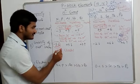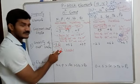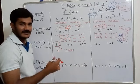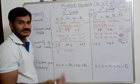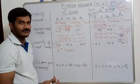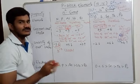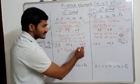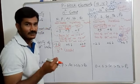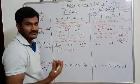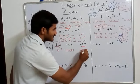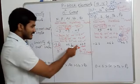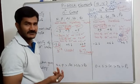As metallic nature increases down the group, elements cannot gain electrons — they tend to lose electrons instead. That's why plus 3 stability increases down the group. Bismuth is stable in plus 3, whereas nitrogen cannot form a stable plus 3 compound.